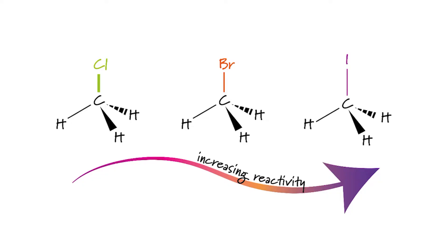As we can see here, iodoalkanes are more reactive than bromo or chloroalkanes. Fluoroalkanes are, to all intents and purposes, inert. They just don't react. How can we explain this trend? Well, we have two things to consider.